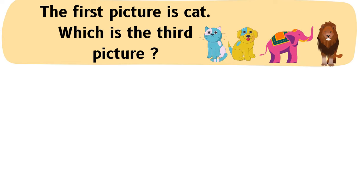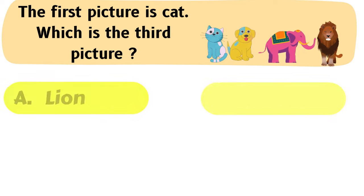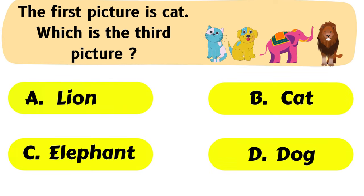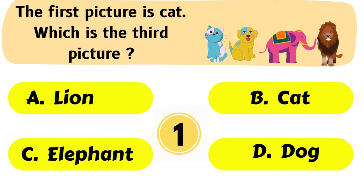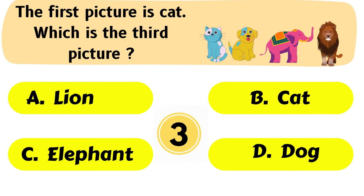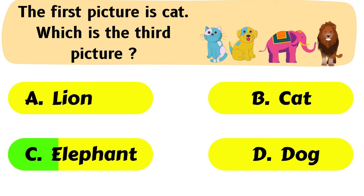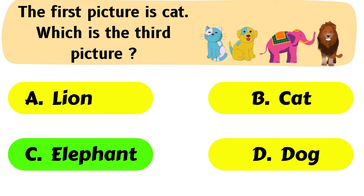Question No. 14: The first picture is Cat. Which is the third picture? A. Lion, B. Cat, C. Elephant, D. Dog. The correct answer is Option C: Elephant.